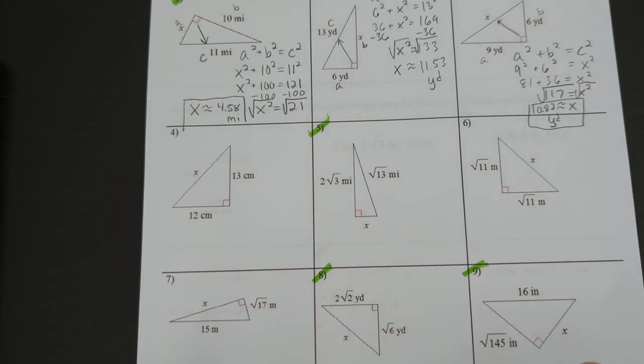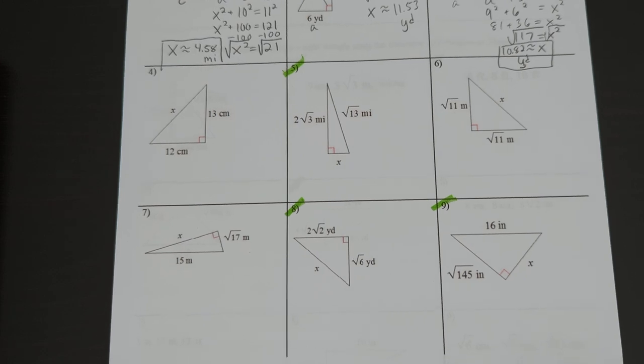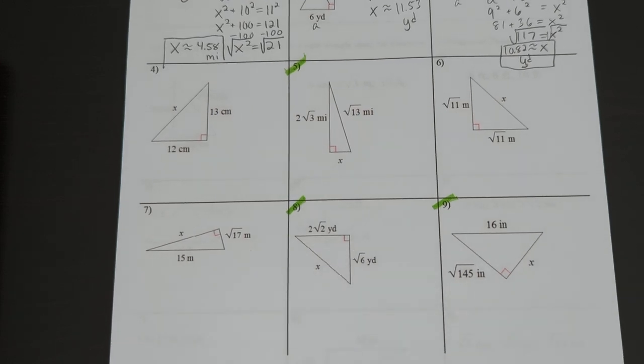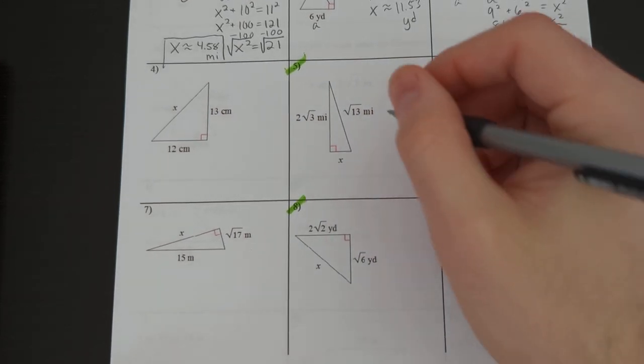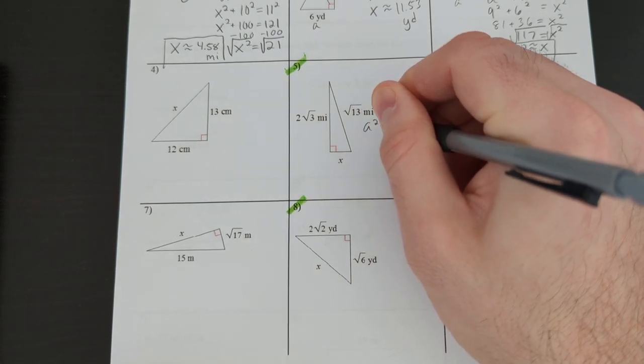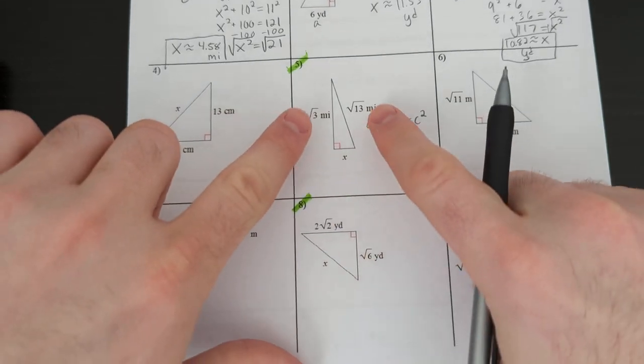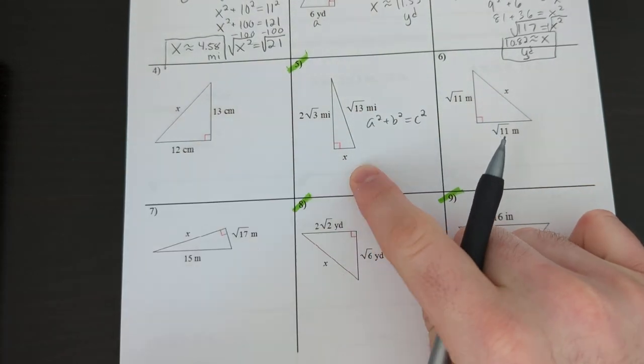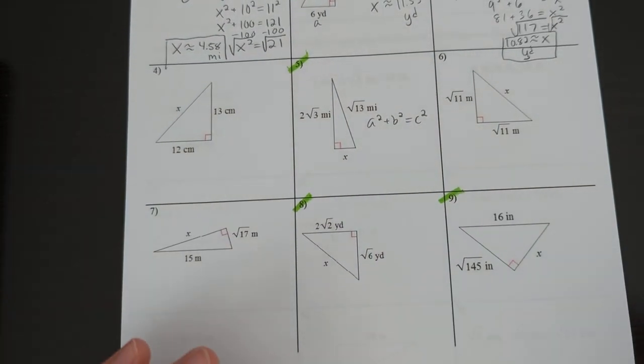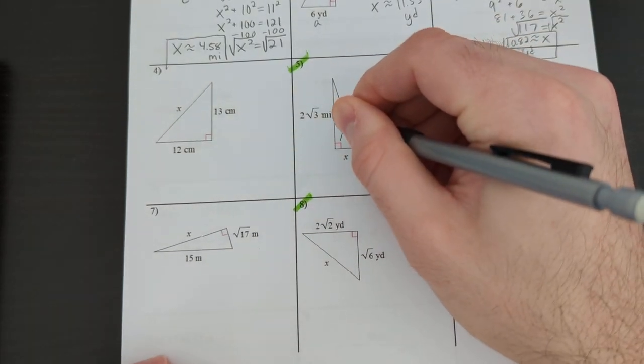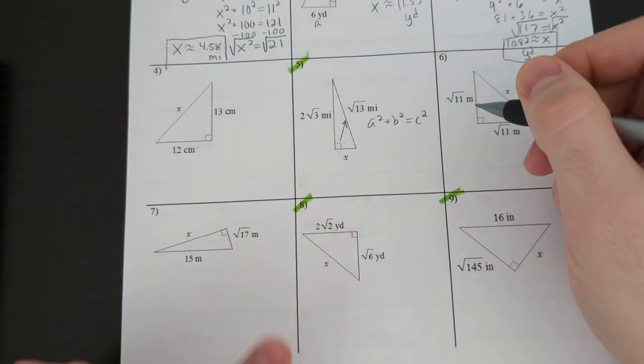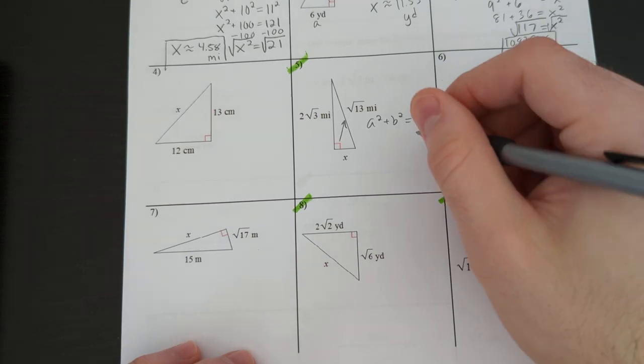So the same process applies, the numbers just look a little bit different. The difficulty is not any higher, you just have to be careful with the details. Same formula as before, a squared plus b squared equals c squared. Number five's got two numbers with radicals in it on the missing side here. Let's first find out which one's c. Go to your right angle, draw an arrow across, it looks like the square root of 13 is our c.